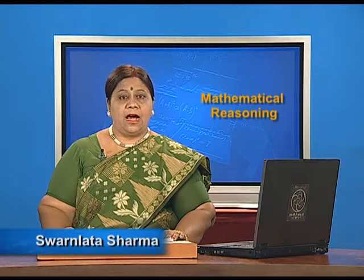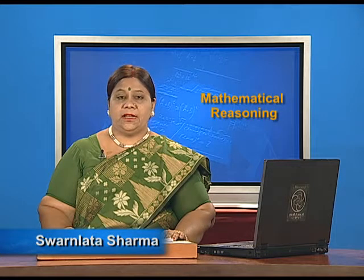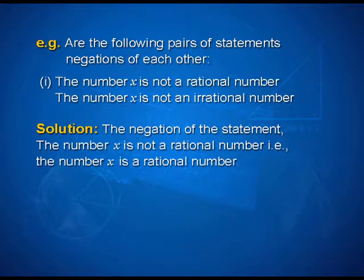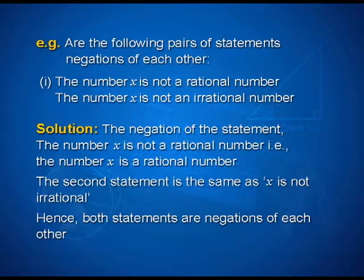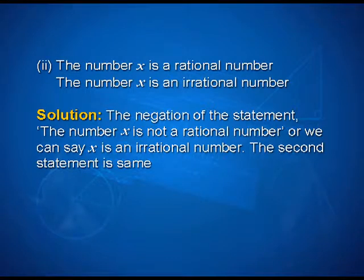Look at this example. Are the following pairs of statements negations of each other? First: the number x is not a rational number; the number x is not an irrational number. The negation of the statement 'the number x is not a rational number' is 'the number x is a rational number.' The second statement is the same as x is not irrational. Hence, both statements are negations of each other.